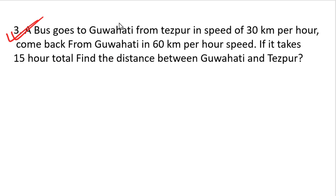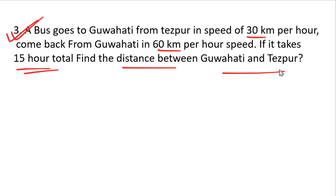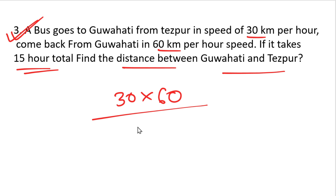Second question: a bus goes from Tezpur to Guwahati at a speed of 30 km per hour and comes back at 60 km per hour. If it takes 15 hours total, find the distance between Guwahati and Tezpur. Using the formula: 15 into 30 times 60 divided by 30 plus 60. What is the answer?